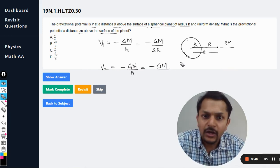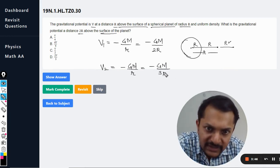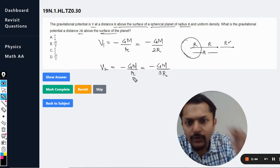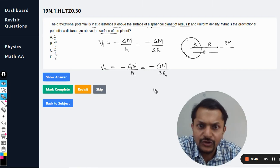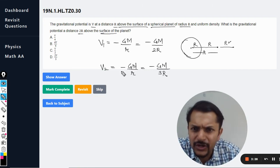So we are going to substitute it as 3R. Now we are just going to find the ratios, or we can substitute the values. Either way you can find the value of V2.